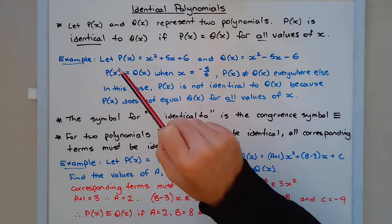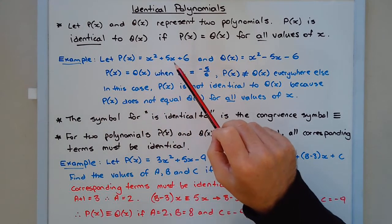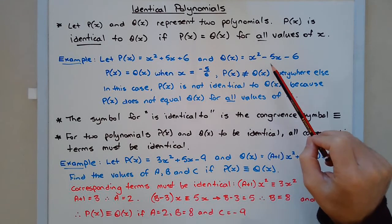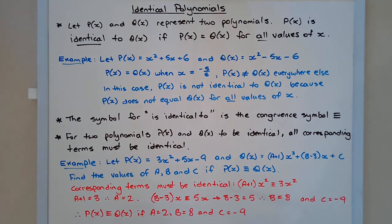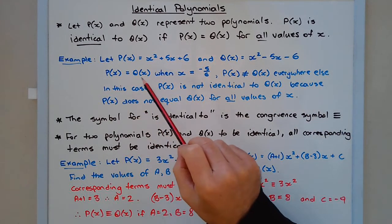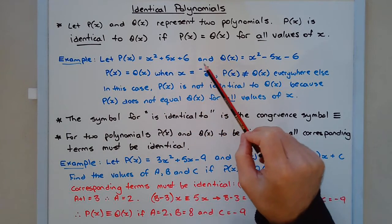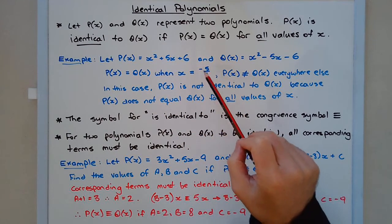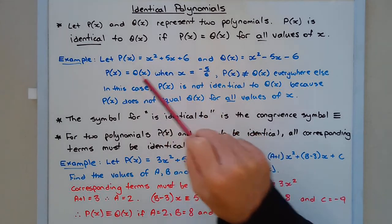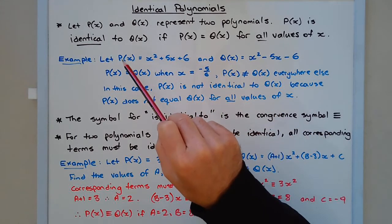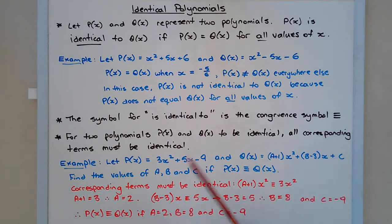For example, let P of X equal X squared plus five X plus six and Q of X equal X squared minus five X minus six. Now P of X equals Q of X when X equals negative five on six. So that means if we substitute negative five on six into both P of X and Q of X, the values of P of X and Q of X will be identical only at this point though.